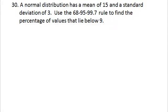A normal distribution has a mean of 15 and a standard deviation of 3. Use the 68-95-99.7 rule to find the percentage of values that lie below 9. Remember: 68% lies within 1 standard deviation, 95% within 2 standard deviations, and 99.7% within 3 standard deviations of the mean.